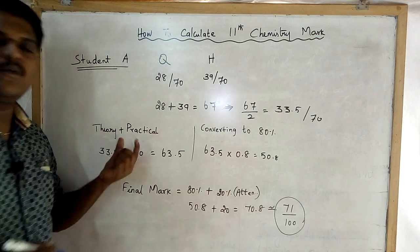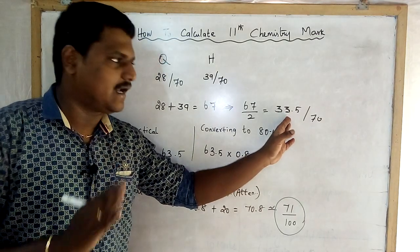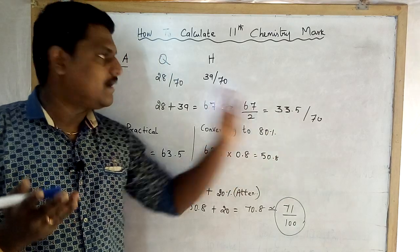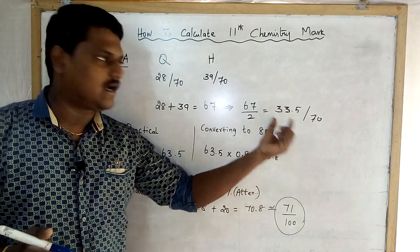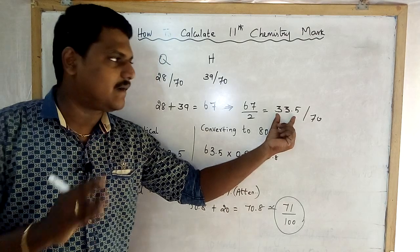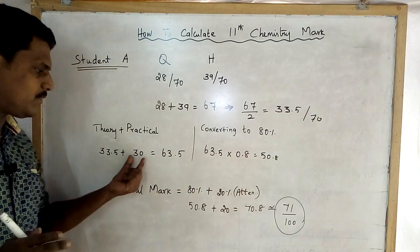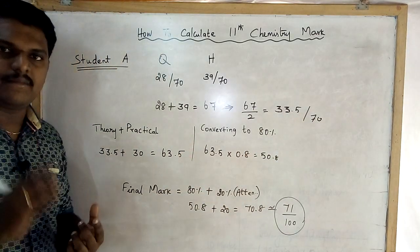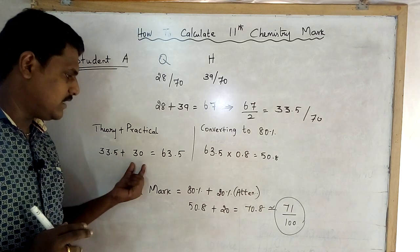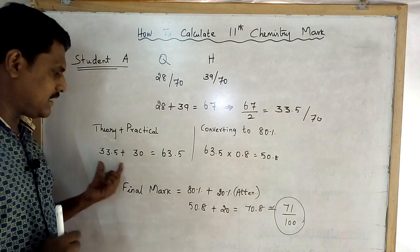Theory and practical are combined. 70.5 is the public exam theory mark, giving 33.5. The theory mark is 70. We now add the practical mark.